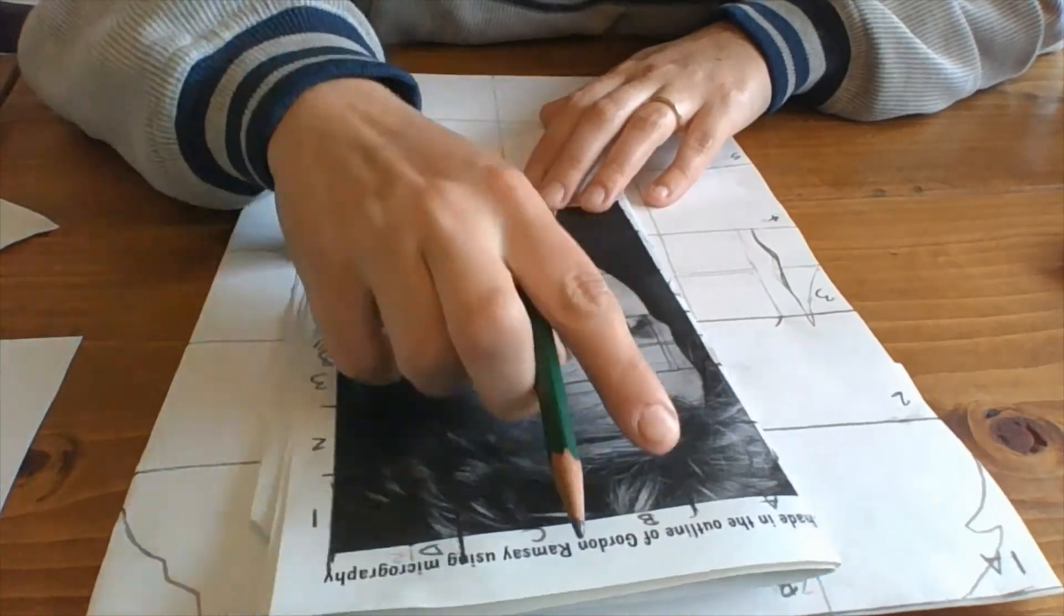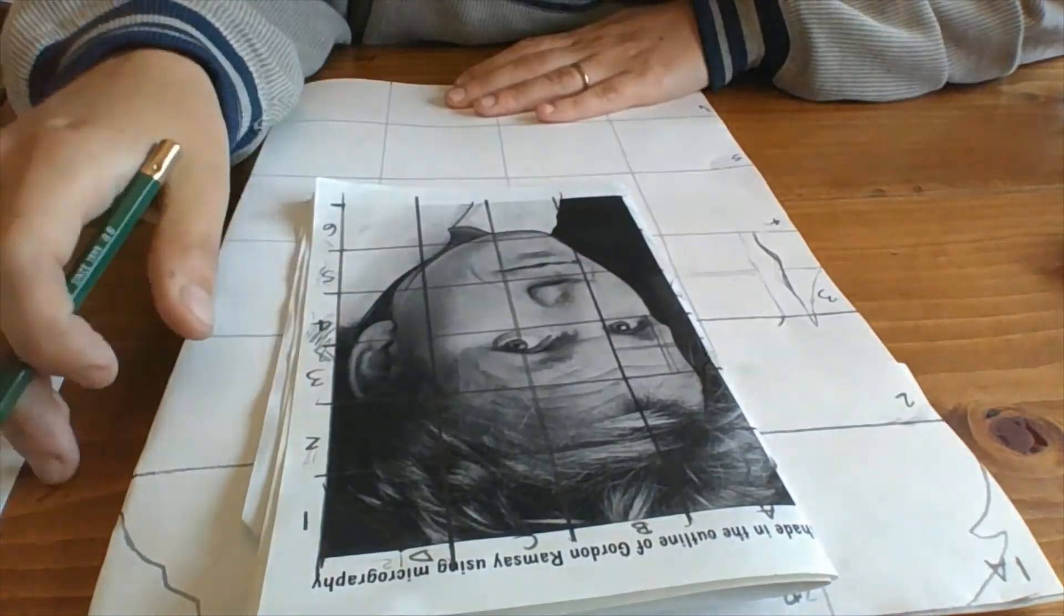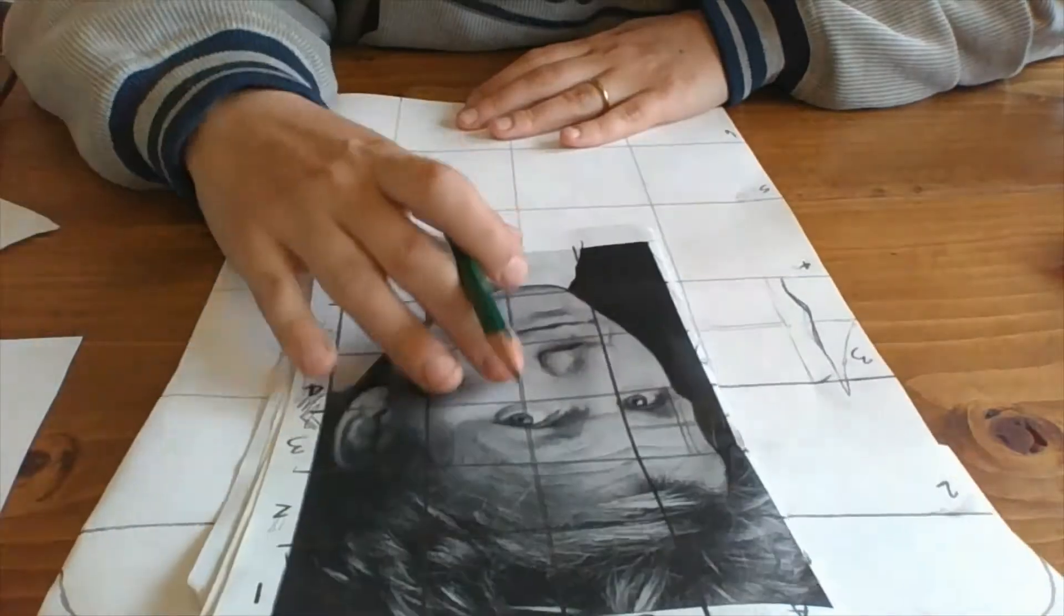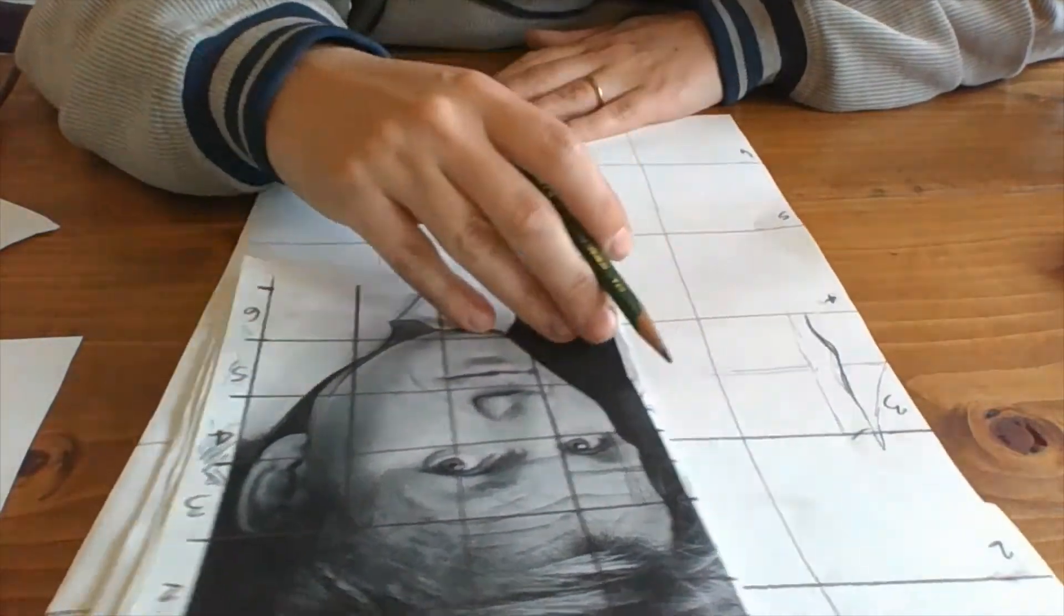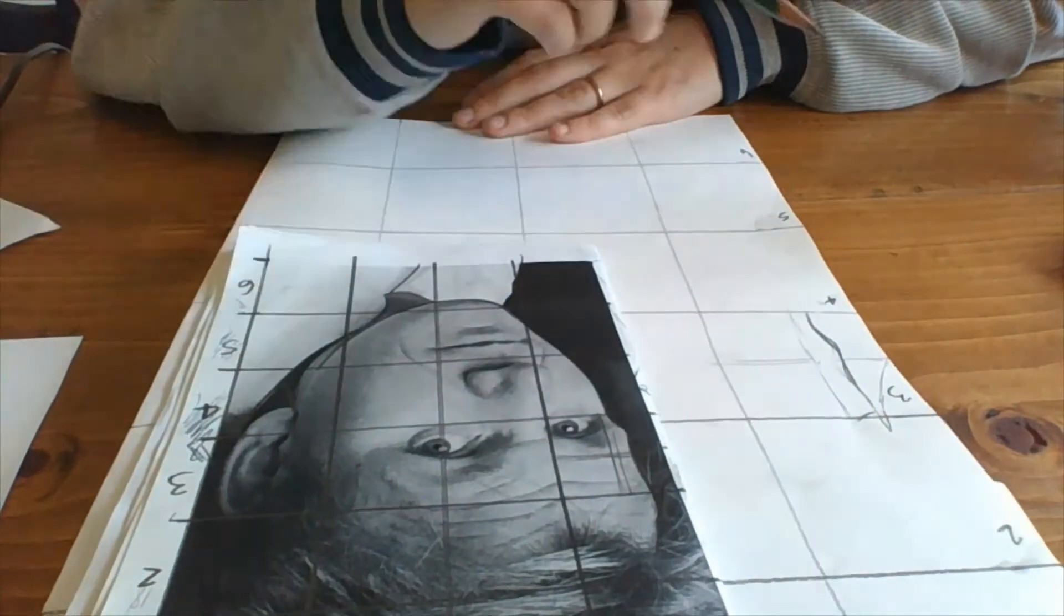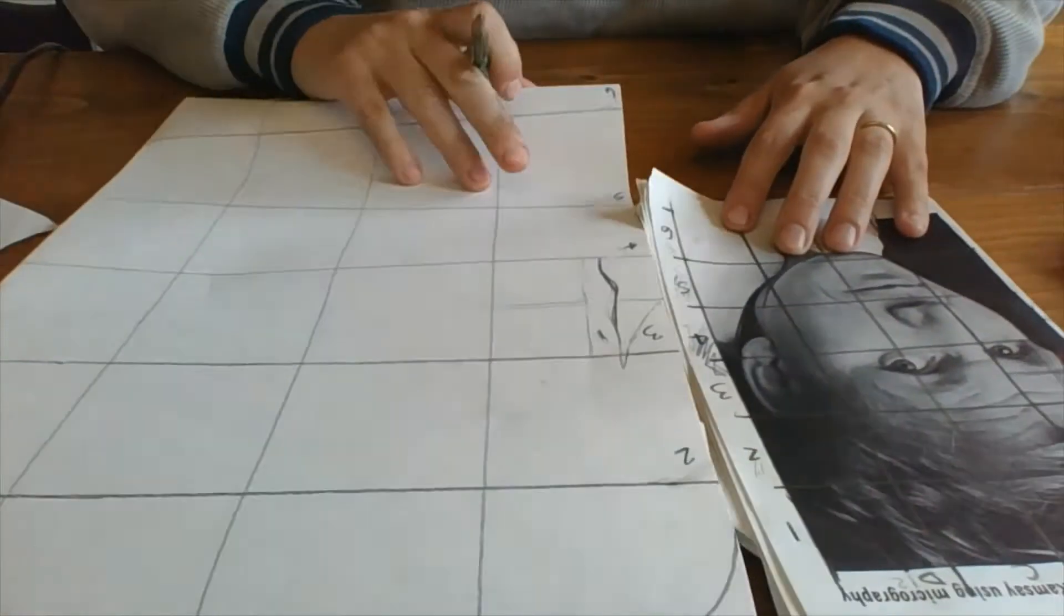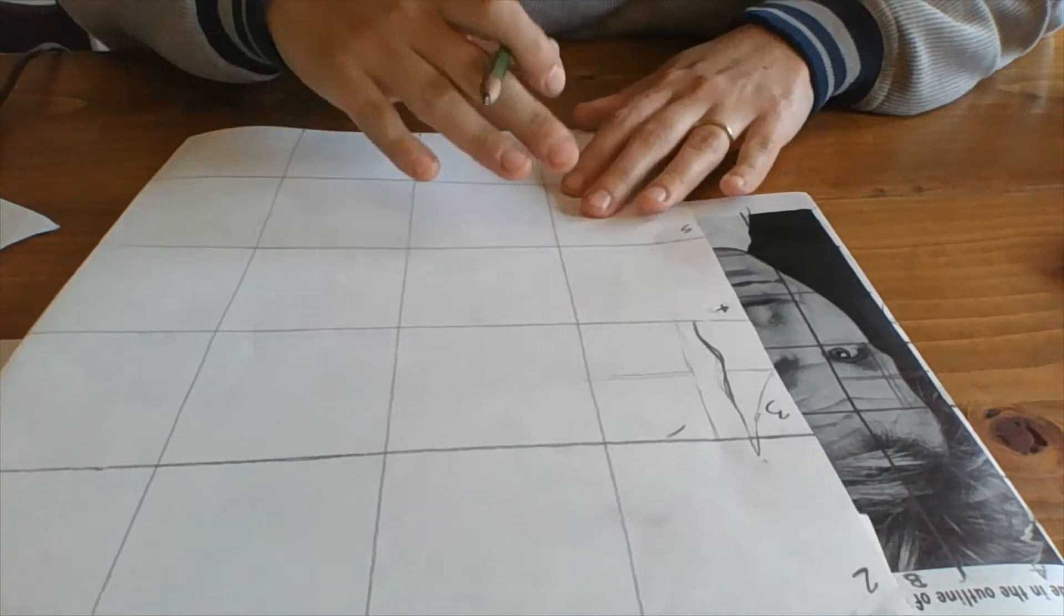The next square, which is 4A, is his cheeks, which kind of curve inwards like this. Let's see. I can tear it up so I'm drawing right next to it. That would be nice.